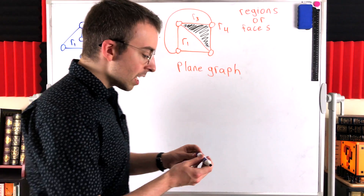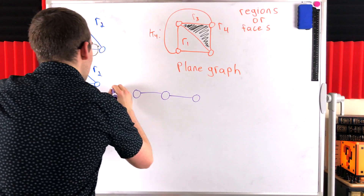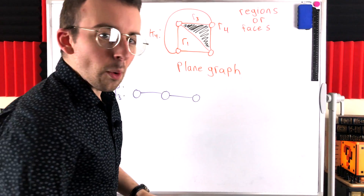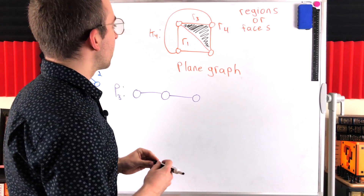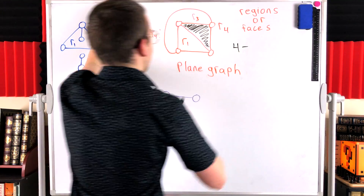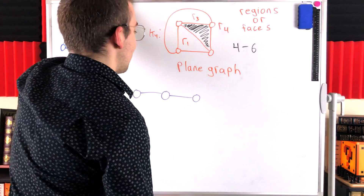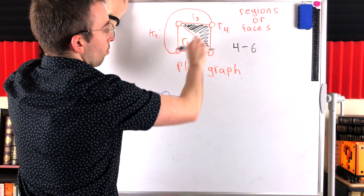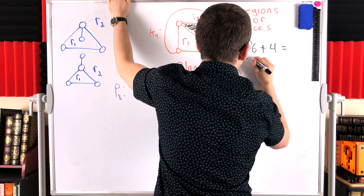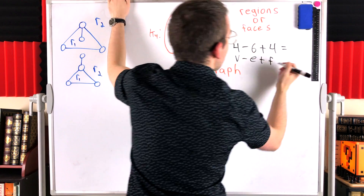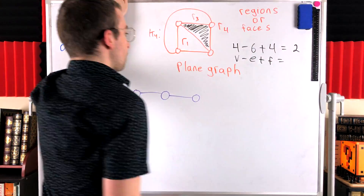Let's draw one more planar graph before we touch on an important property. Consider the path graph on three vertices — just another example drawn in the plane with no edge crossings. Now here's something pretty cool. K4 has four vertices, six edges, and four regions (R1, R2, R3, R4) in its plane drawing. If we take vertices minus edges plus regions: four minus six plus four equals two. What if we look at another plane graph? That one has four vertices, four edges, and two regions: four minus four plus two also equals two.